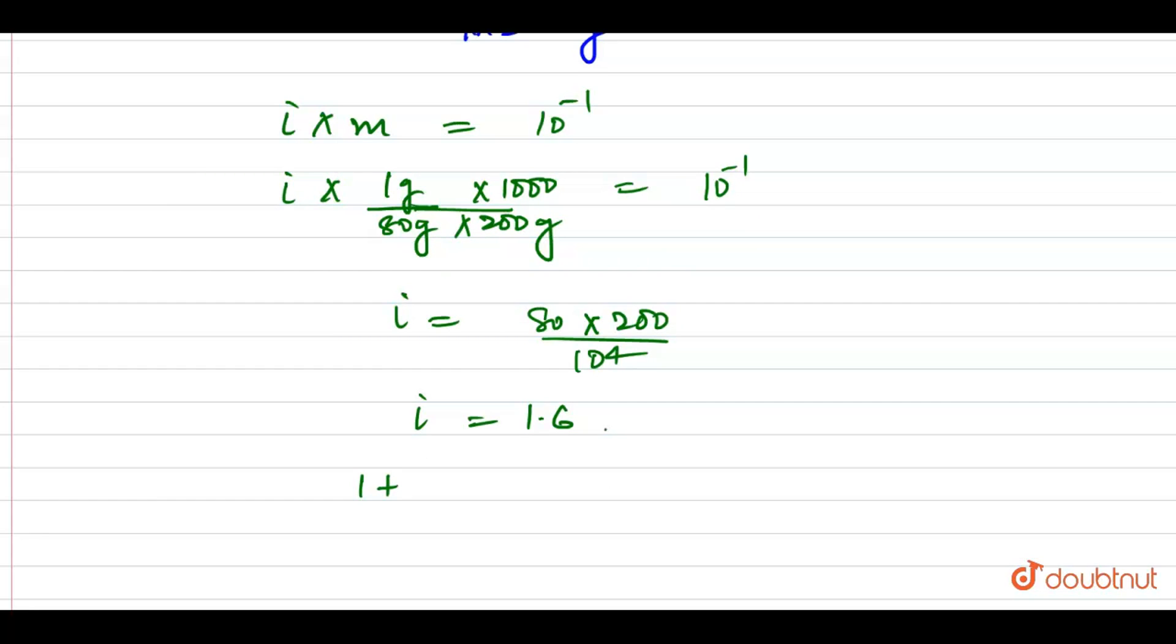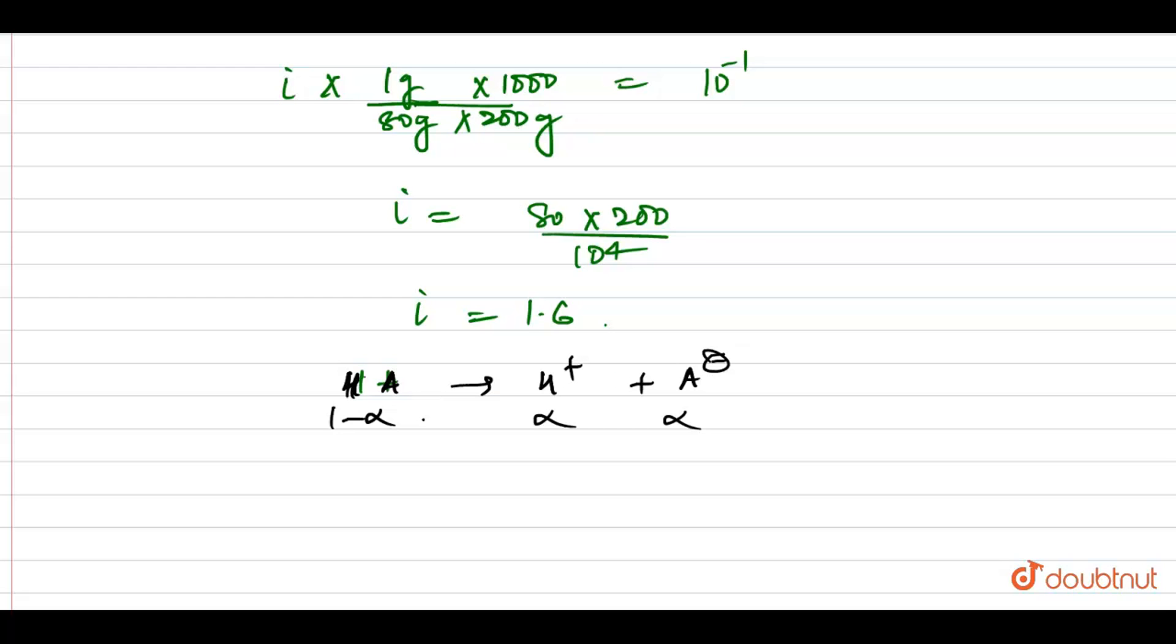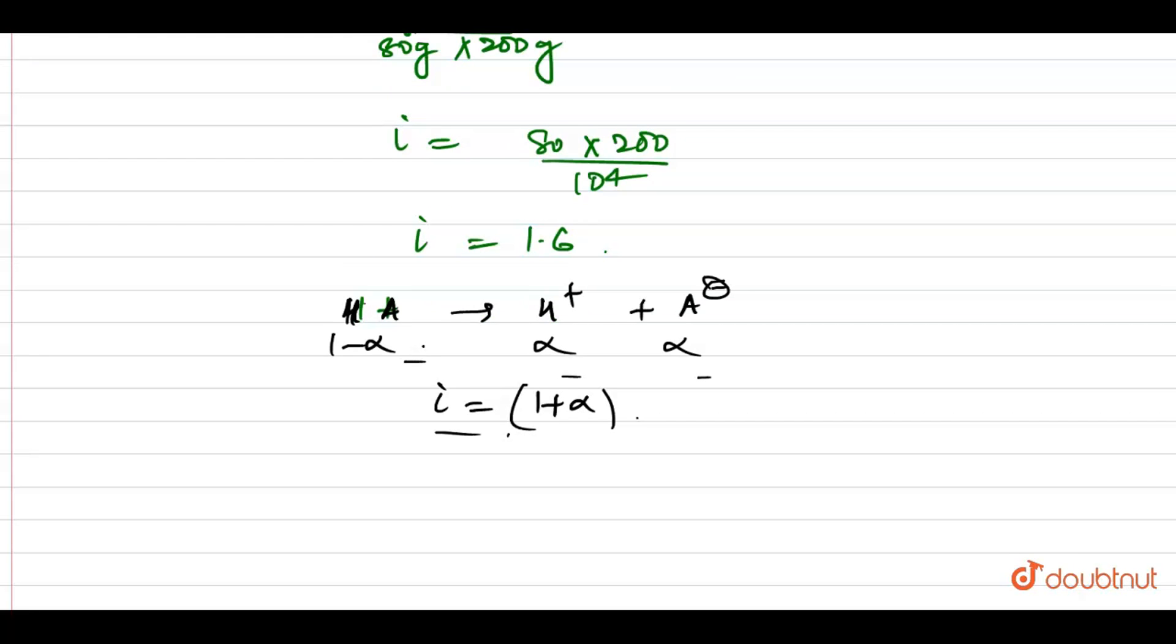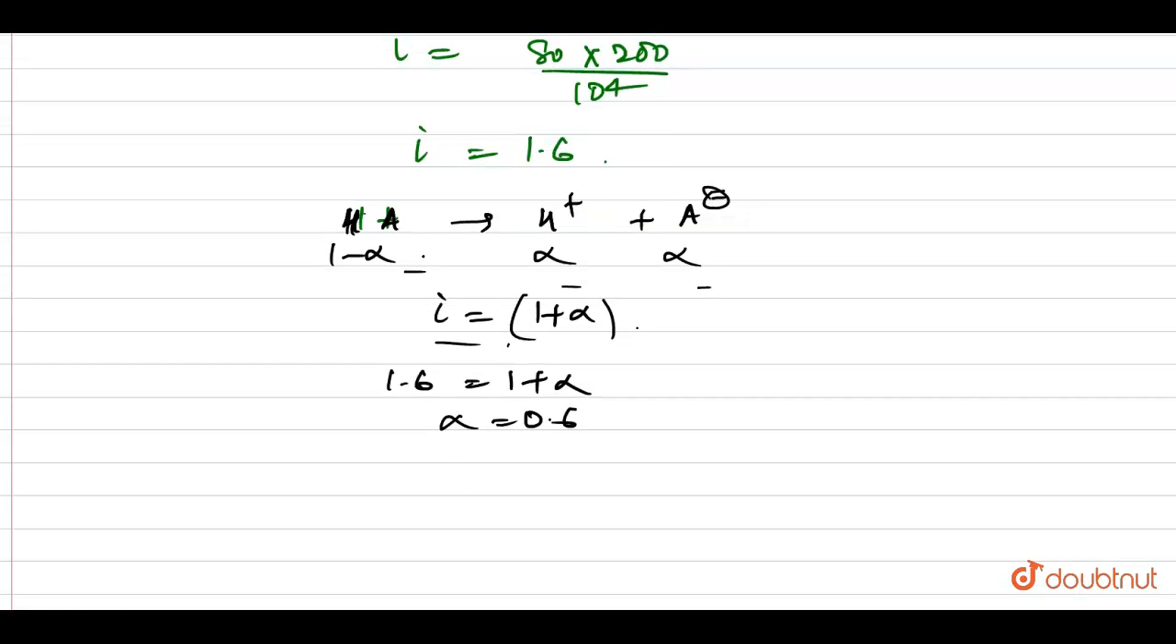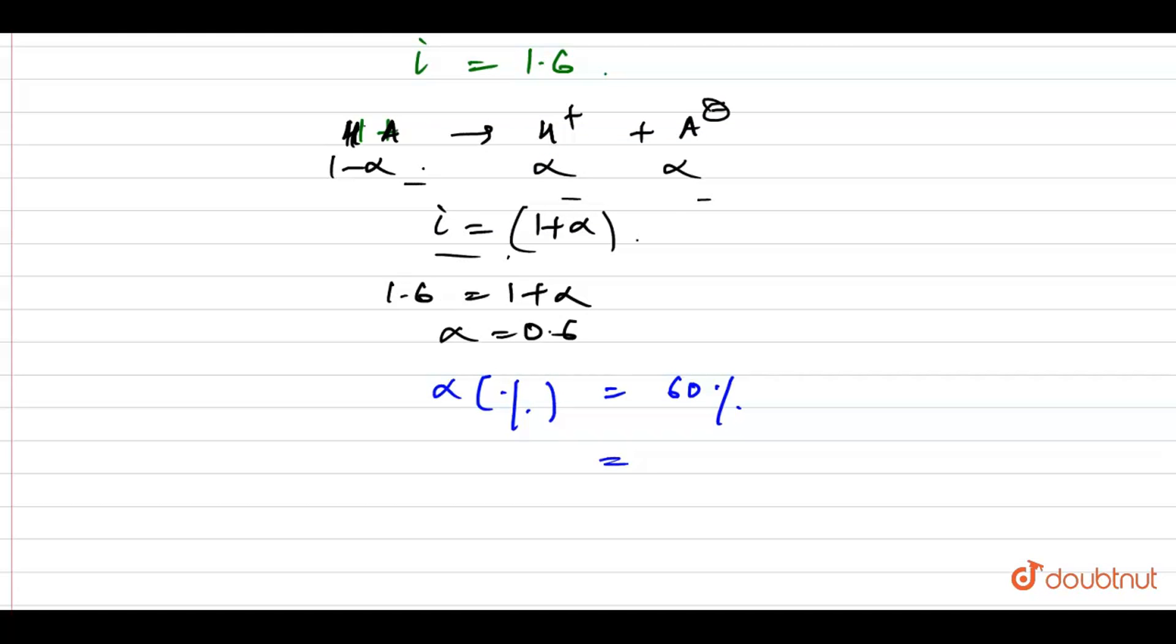Now, for a monobasic acid HA, i equals 1 plus alpha. So 1.6 equal to 1 plus alpha, which means alpha is 0.6. If I look at the percentage of alpha, it is 60%. And alpha is given as x into 10, which makes x equal to 6.